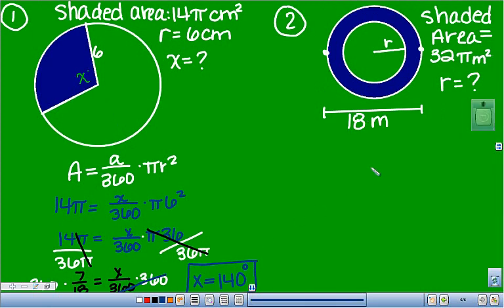So for this one, the shaded area is an annulus. And they tell us it's 32 pi meters squared is the area. They want to find a little r, which is the radius of the smaller circle. And they give us the distance across the larger circle. That's diameter. And remember, diameter is twice the radius. So my large radius, radius of the large circle is going to be half of that, which would be 9. So I'm going to use that and I'm going to plug it into my formula.